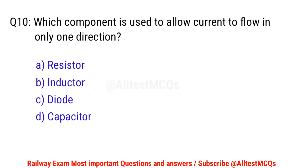Q10. Which component is used to allow current to flow in only one direction? D — right option is C. Diode.